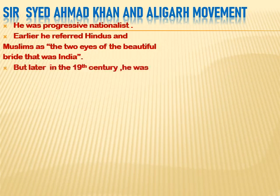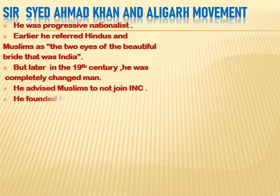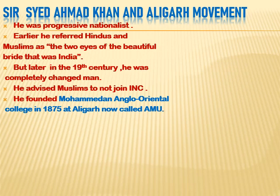Later, when Sir Sayyid Ahmad Khan came in contact with certain British officers, his views changed. These British officers filled his mind with the idea that the Indian National Congress is a Hindu organization with no concern for Muslim interests. They told him: if you want your people's interests fulfilled, you should be loyal towards us, teach your people loyalty towards the British, and this will only happen if you found a new organization. So he became a totally changed man by the late 19th century. He then advised Muslims not to join INC and to completely boycott Indian National Congress meetings and organizations.